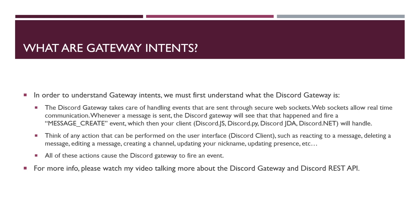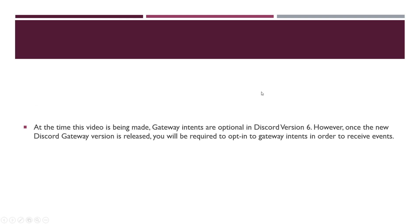If you were ever curious about how libraries such as Discord.js were built, understanding the whole Discord gateway and REST API is the foundation. At the time this video is being made, gateway intents are optional if you're using Discord.js version 12. They do support intents, but you do not need to opt into them right now because we're still on version 6 of the Discord API. However, once the new Discord gateway version is released, you will be required to opt into gateway intents in order to receive events.